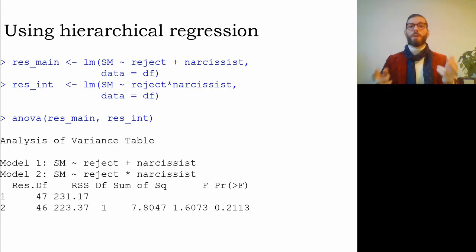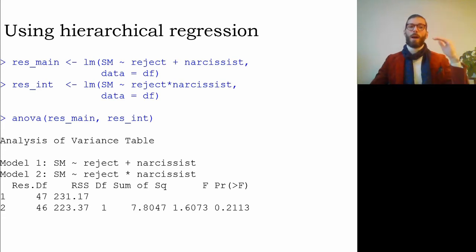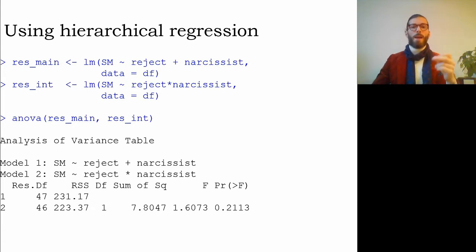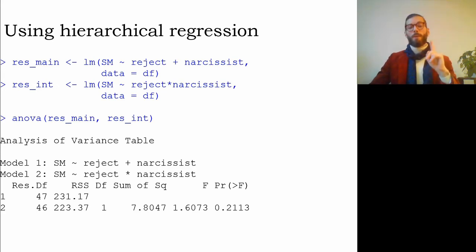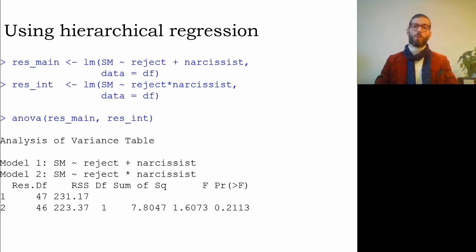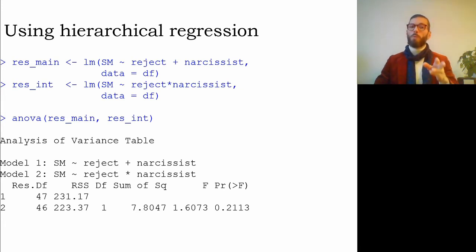Running the ANOVA comparison gives an analysis of variance table with two models — the simpler main effects model on top and the more complicated interaction model below. The degrees of freedom for the difference is one, as one parameter was constrained to zero. The p-value is non-significant, meaning the simpler model is not significantly worse fitting than the more complicated model — so I would prefer the simpler model without the interaction term.